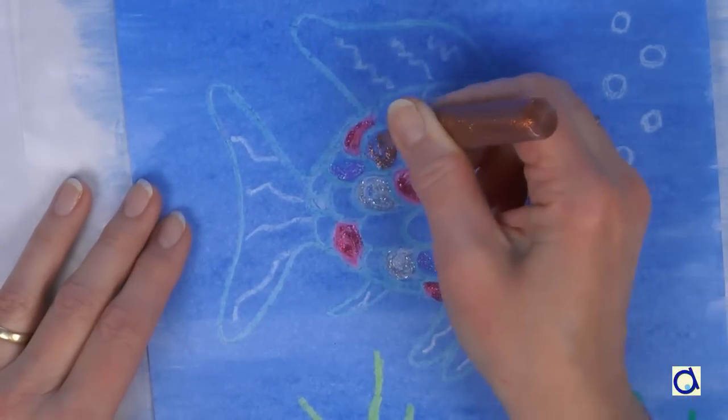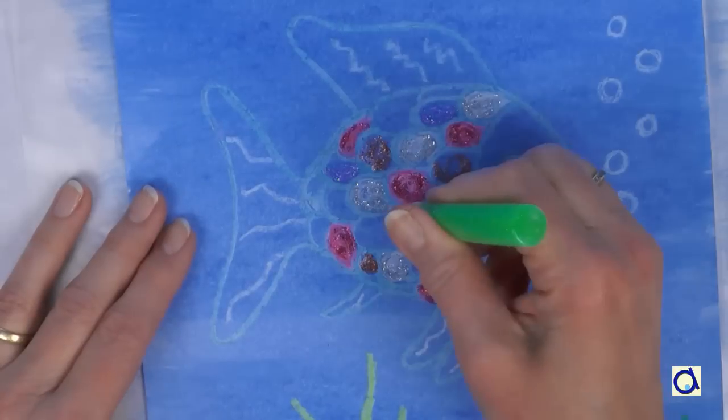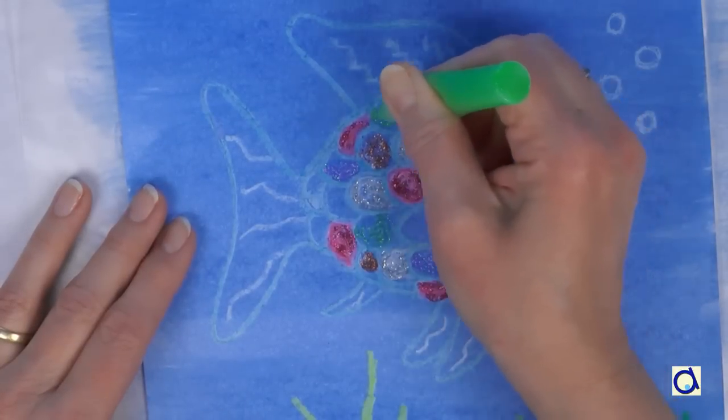To cover the white scales, I used silver glitter glue, while I used various other colours on the remaining scales.